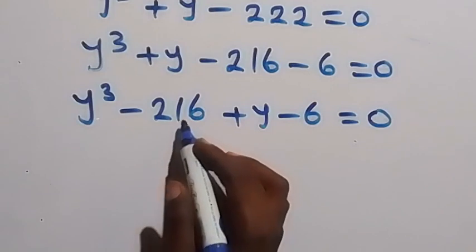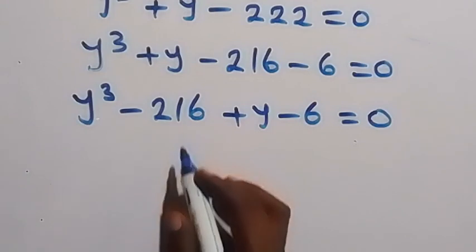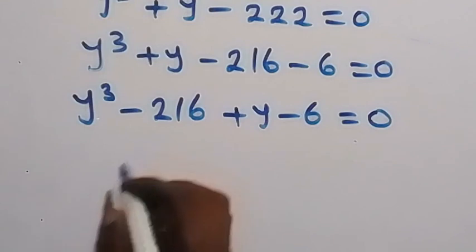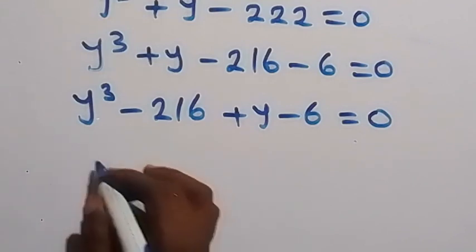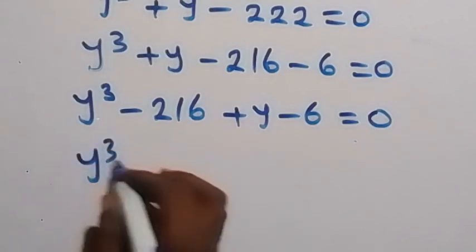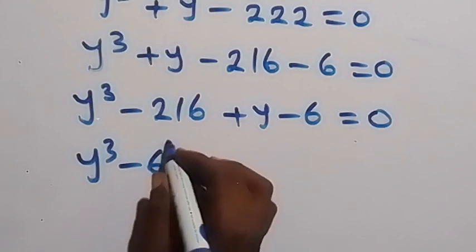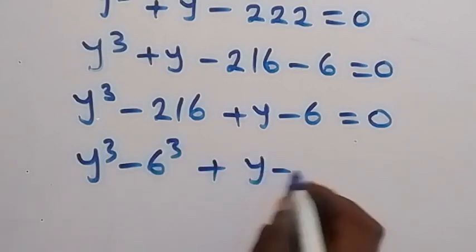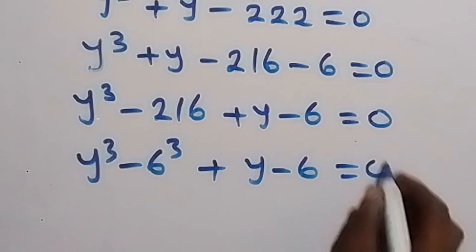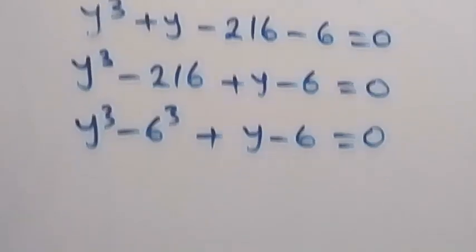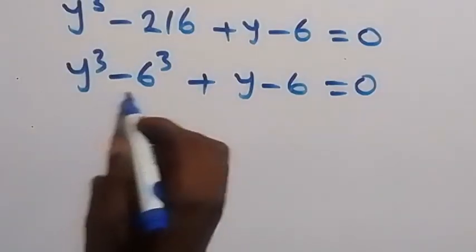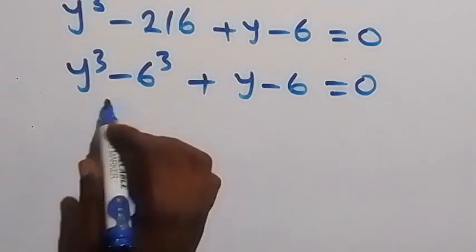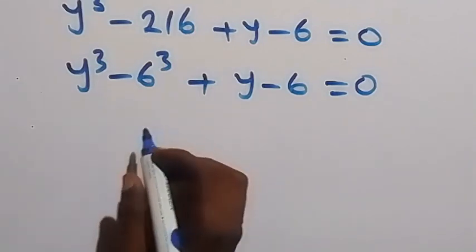We can write 216 as 6 raised to power 3. So we have y raised to power 3 minus 6 raised to power 3, plus y minus 6, equals zero. From the difference of cubes identity, we can write this in another form.